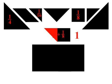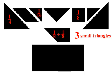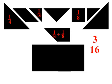Now let's look at two shapes combined: the small triangle and the square. Together these are 1 sixteenth plus 1 eighth of the rectangle. There is 1 small triangle in the small triangle piece and 2 in the square, so there are 3 small triangles in the combined figure. Since there are 16 small triangles in the rectangle, the combined shape is 3 sixteenths. So 1 sixteenth plus 1 eighth equals 3 sixteenths.